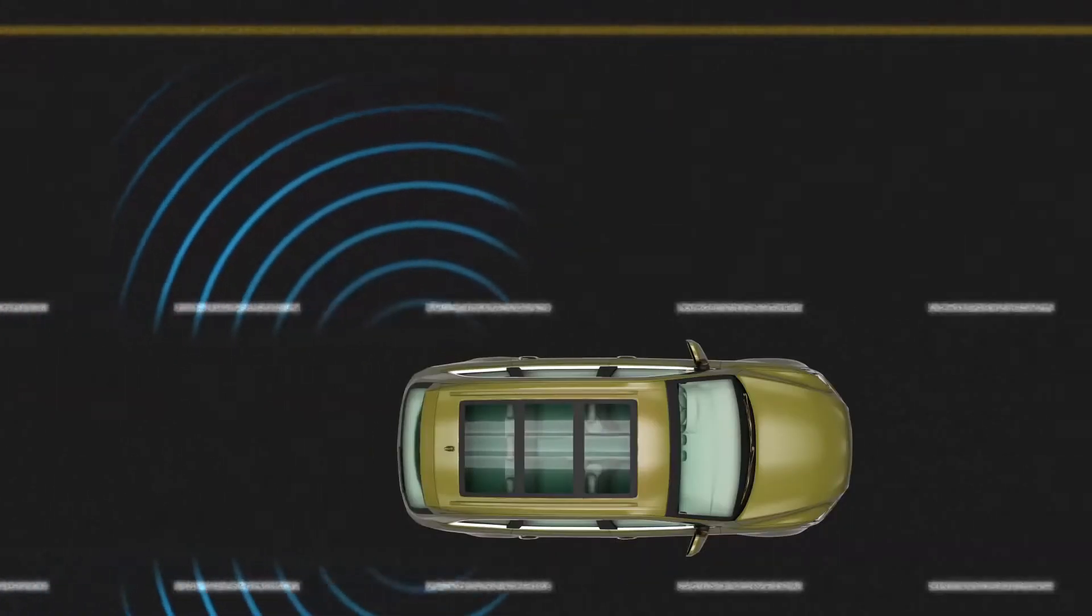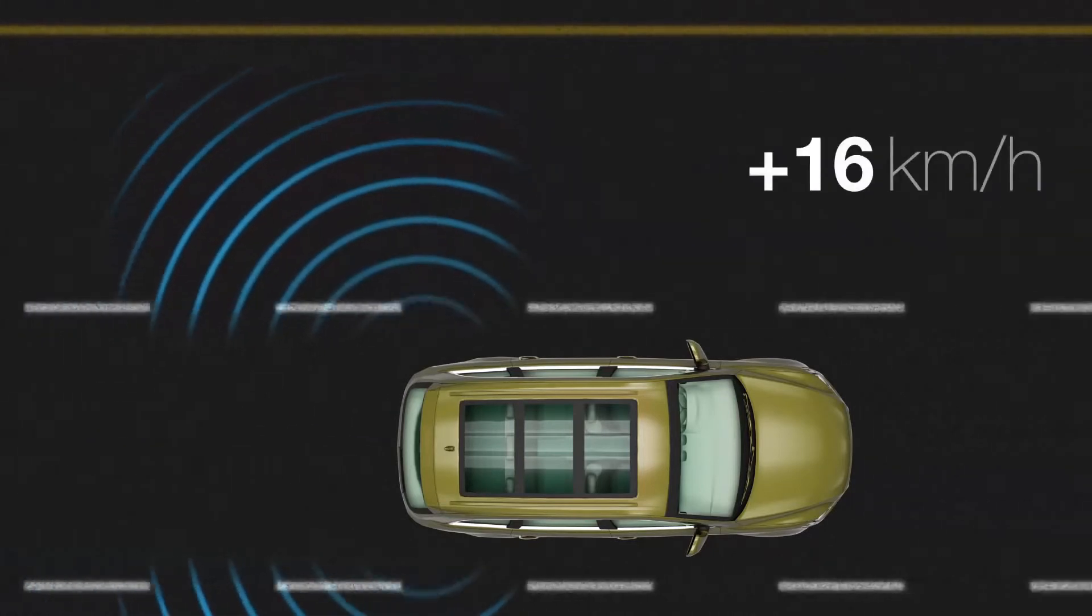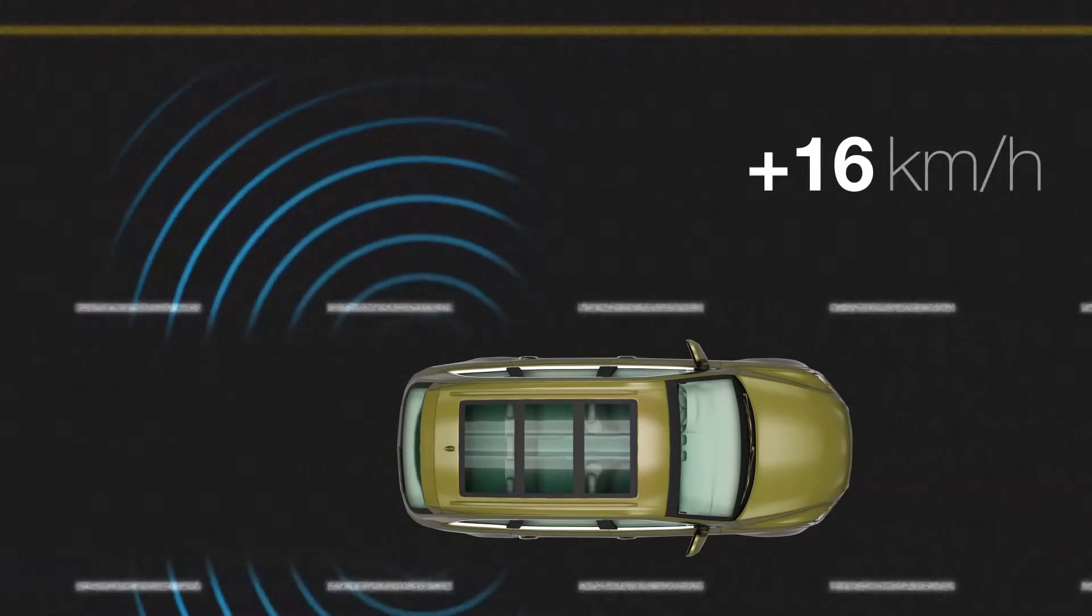When turned on, the Blind Spot Monitor is operational while the vehicle is moving at a speed greater than approximately 16 kilometers per hour.